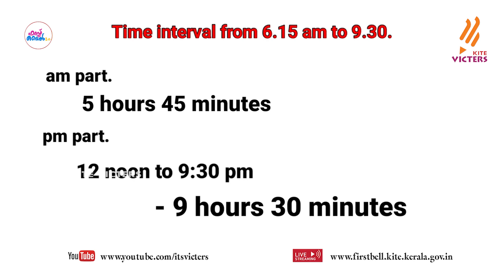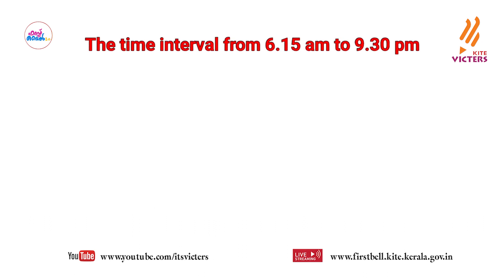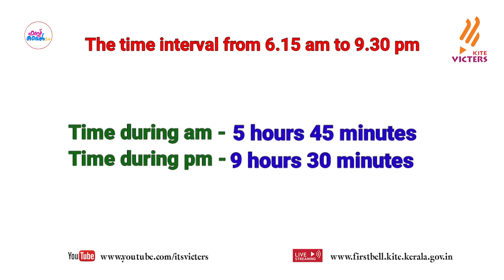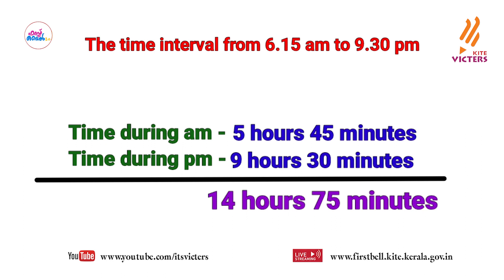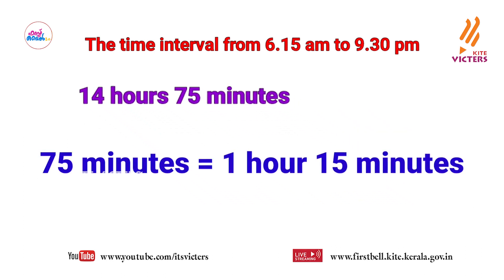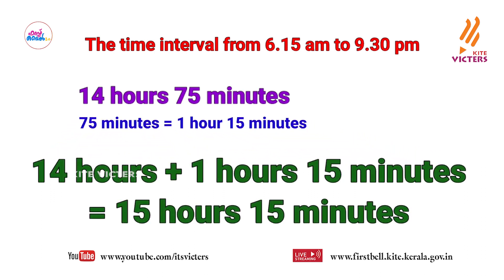So we can rewrite it like this. The time interval from six fifteen AM to nine thirty PM is: time during AM — five hours forty-five minutes; time during PM — nine hours thirty minutes. The total time is fourteen hours seventy-five minutes. Seventy-five minutes means one hour fifteen minutes. So the total time is fourteen hours plus one hour fifteen minutes equals fifteen hours fifteen minutes. Raju took a total of fifteen hours fifteen minutes for the ride.